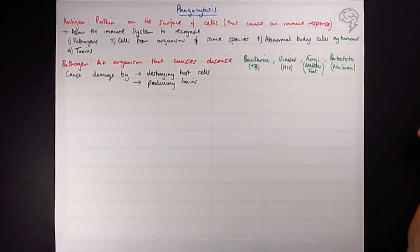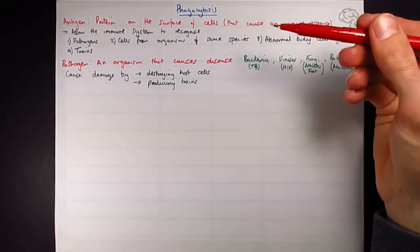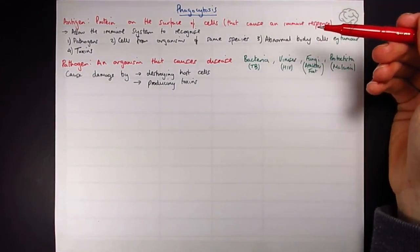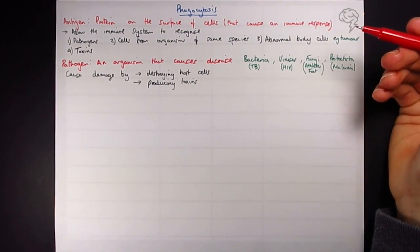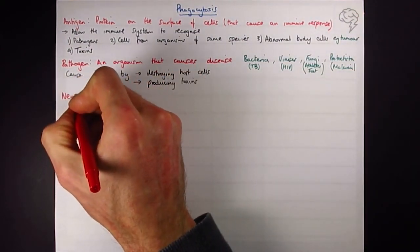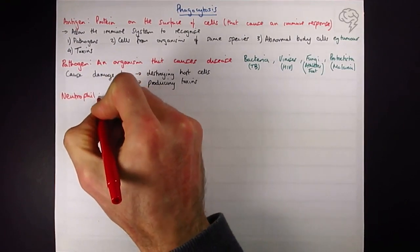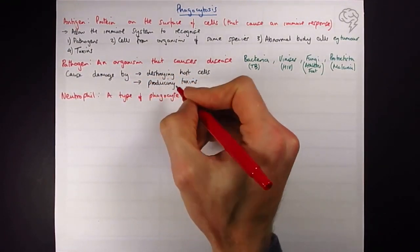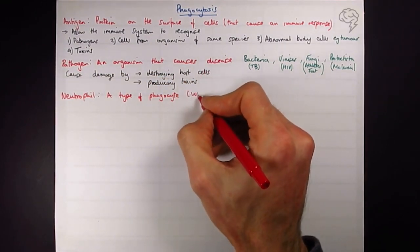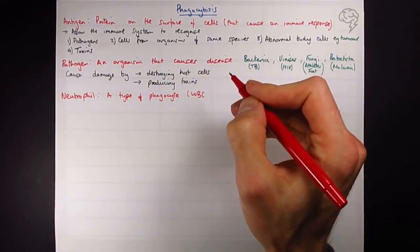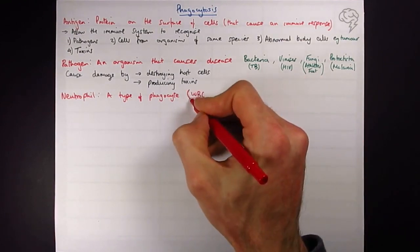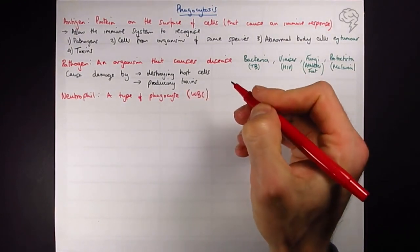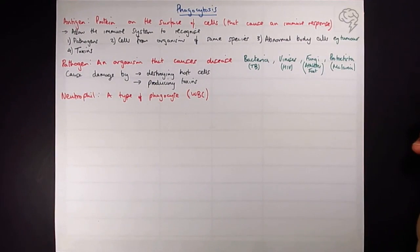A couple more key terms. Neutrophil: we're going to be talking about phagocytosis as the process here, and neutrophil is a particular type of phagocyte. All phagocytes are in the family of white blood cells. A phagocyte is a white blood cell, also sometimes called lymphocytes or leukocytes. I'm not going to put that here because we mostly talk about lymphocytes when talking about T cells and B cells.